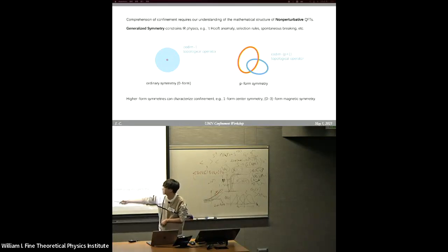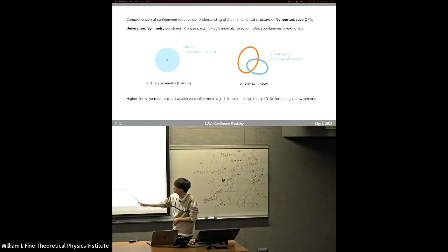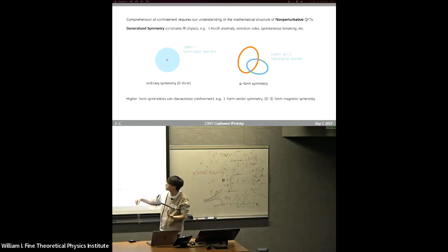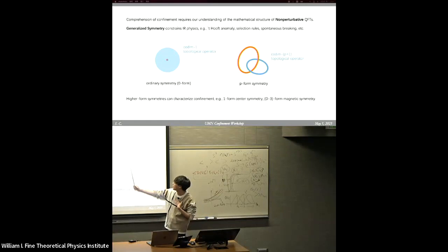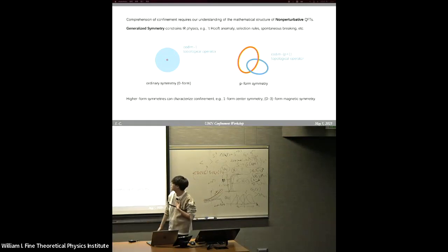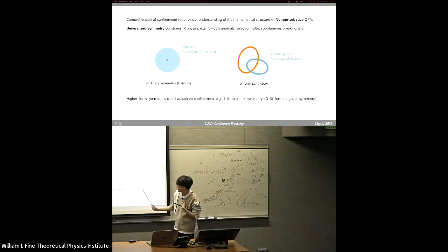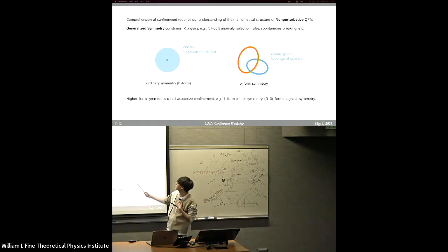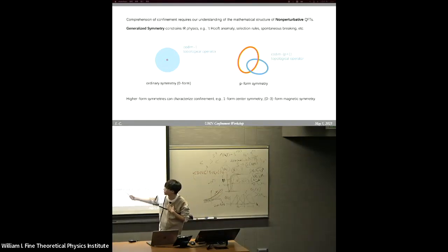I assume that you guys are very familiar with higher form symmetry, but let me slightly introduce what it is. For ordinary symmetry, the generating operator is a codimension-one topological operator. But if we look at higher codimensional topological operators, then we can create so-called higher form symmetry. It's typically called a p-form symmetry for a codimension p+1 topological operator. The important center symmetry in confinement physics is one-form symmetry, which means that its topological operator has codimension two.